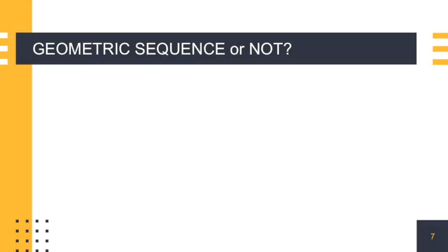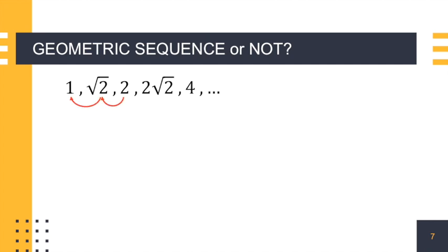Let's identify if the following sequences are geometric or not. For example: 1, square root of 2, 2, 2 square root of 2, 4. Is this geometric or not? We are going to get the ratio of the succeeding and the preceding: square root of 2 divided by 1, 2 divided by square root of 2, 2 square root of 2 divided by 2, and 4 divided by 2 square root of 2. We get square root of 2 in all of those ratios. Therefore, the ratio is common, and we can conclude that this is a geometric sequence wherein the common ratio is square root of 2.